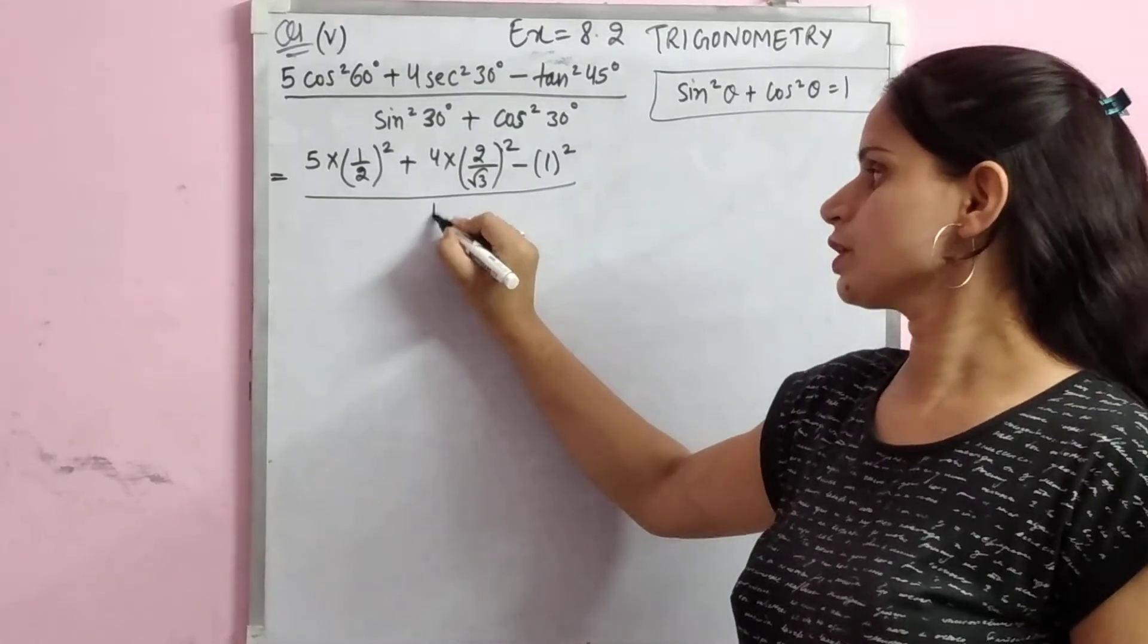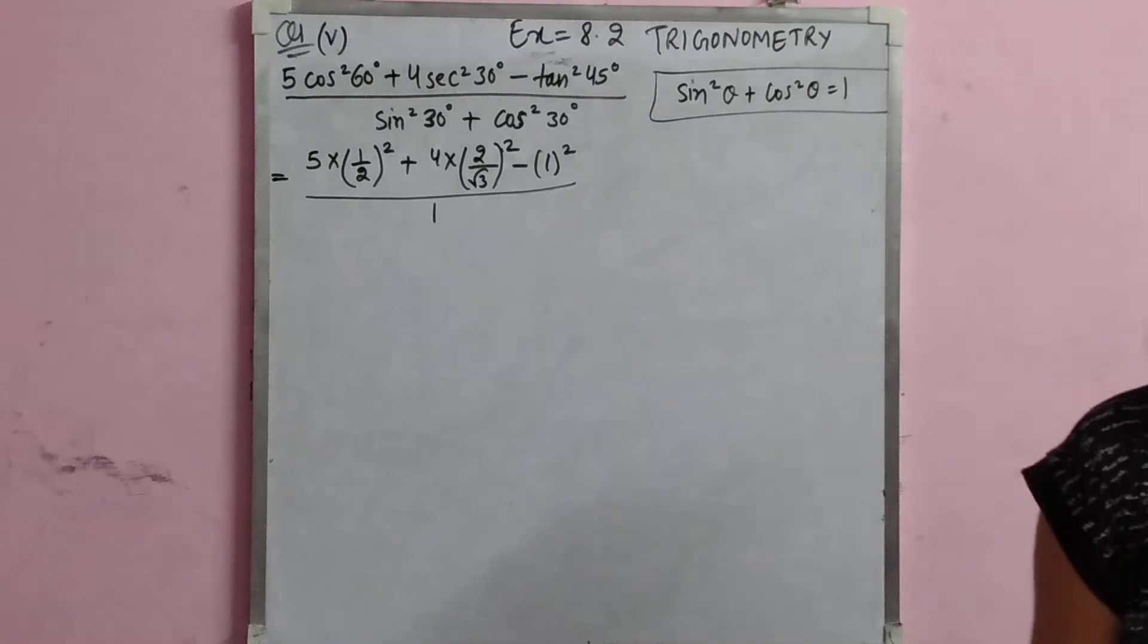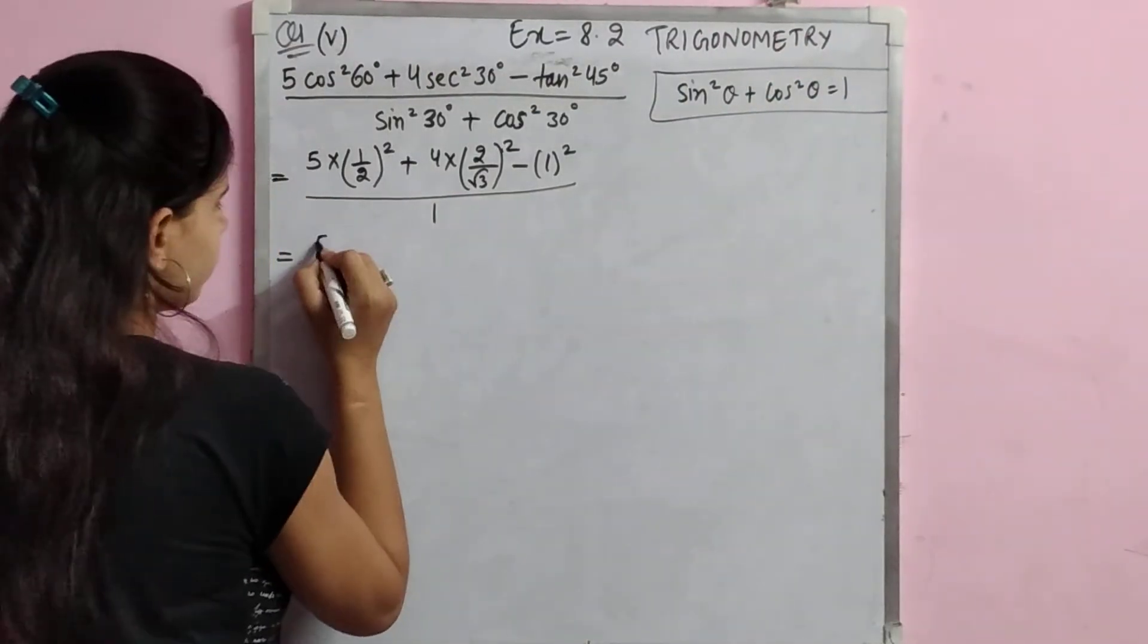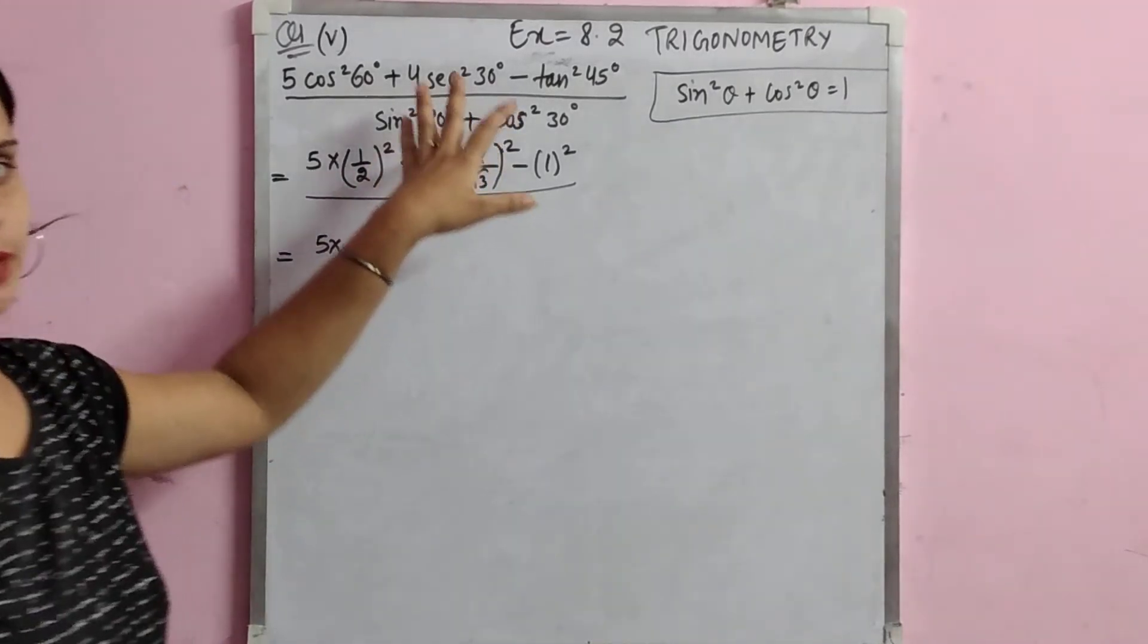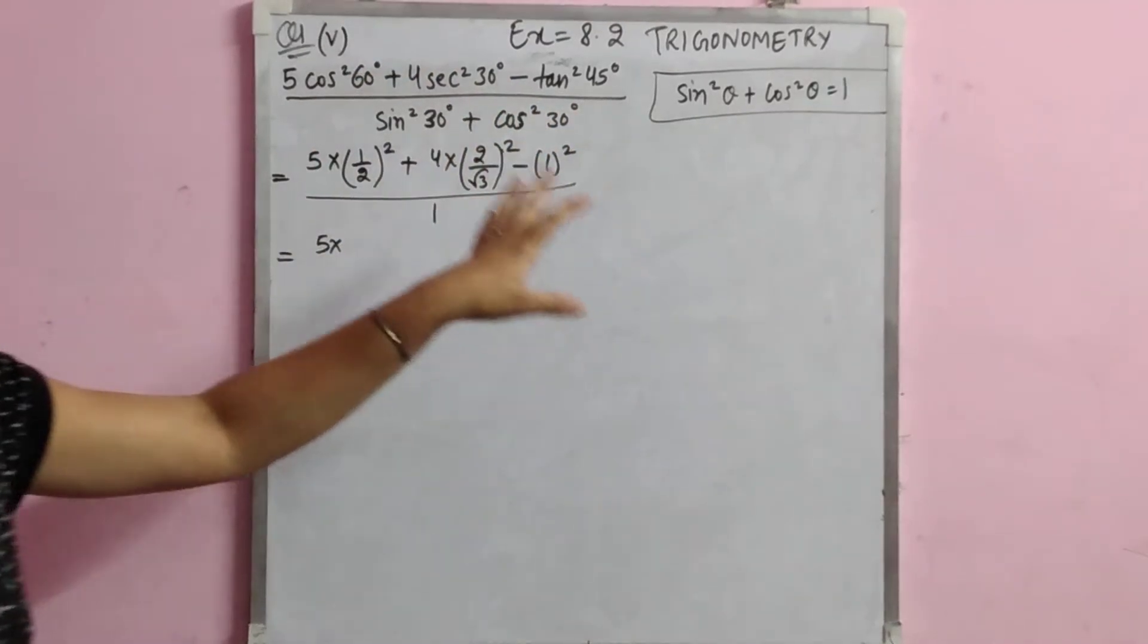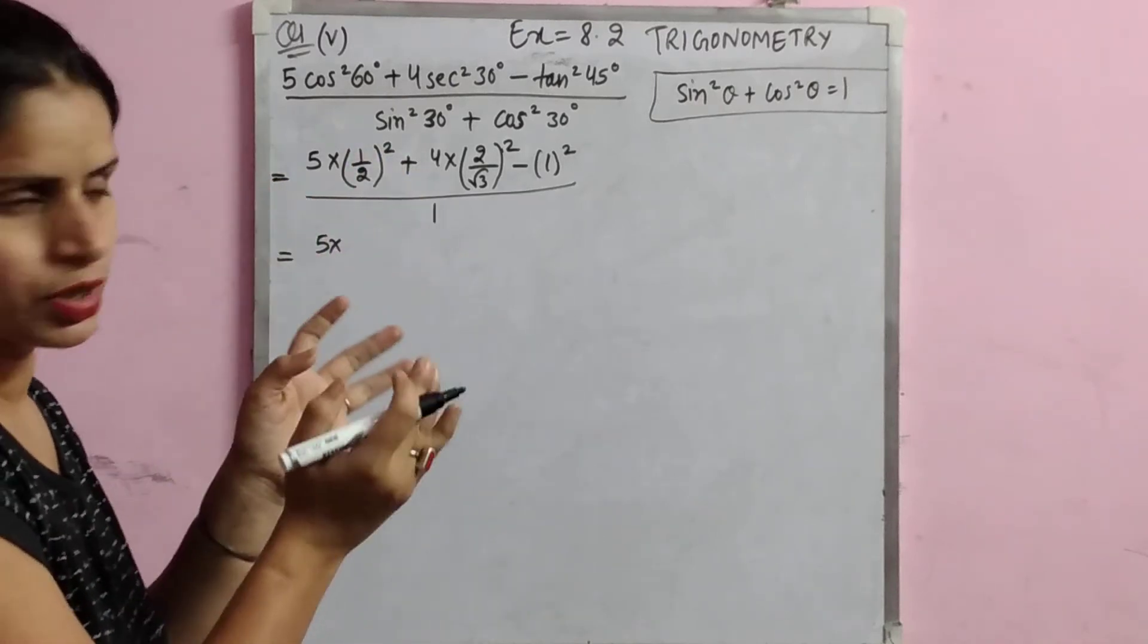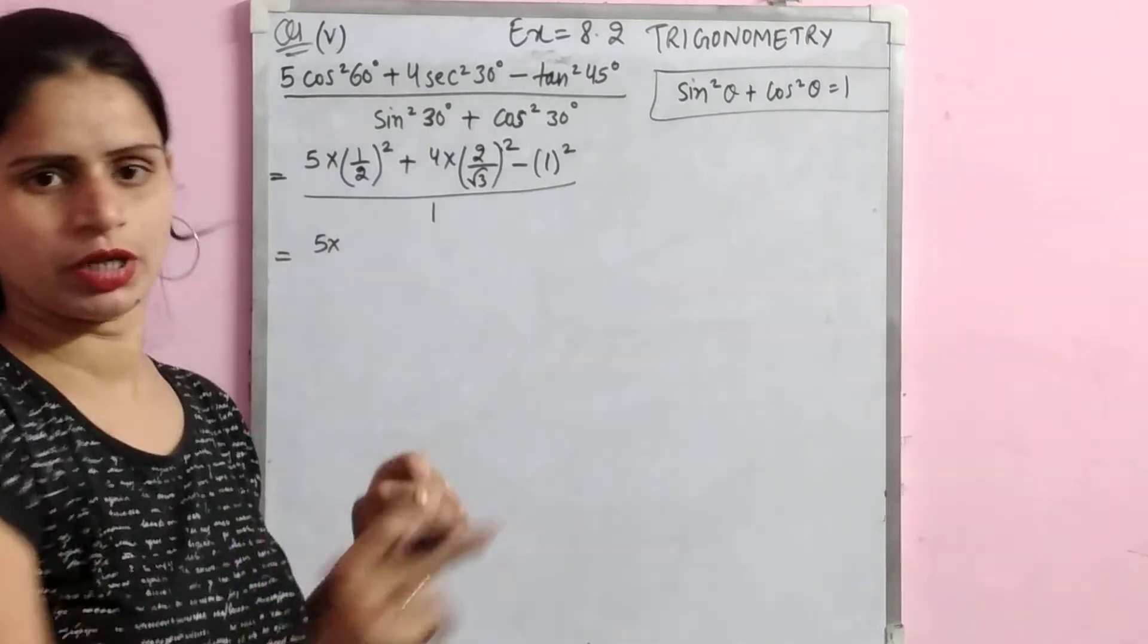If you are not aware of this identity, you can substitute the values directly and calculate sin² 30° and cos² 30° separately. But using this formula is a bit easier. If we do not use it, we will have to do more calculation, so it could be more work.